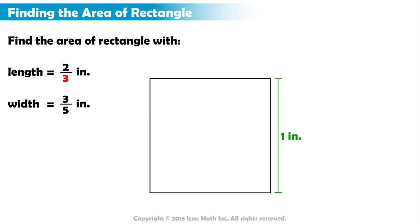Since the denominator in the length of our rectangle is 3, we divide our unit square vertically into 3 equal parts. Each part represents 1 third of the area covered by the unit square. Since our numerator is 2, we will shade 2 of those parts in blue.